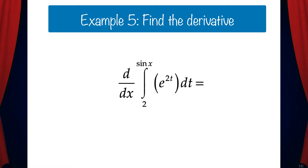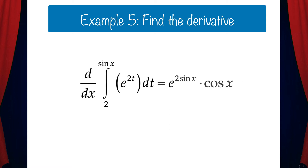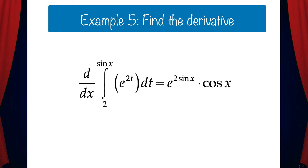Let's try an example. Find d/dx of the integral from 2 to sine x of e to the 2t dt. To find this derivative all we need to do is use the shortcut. That gives us e to the 2 sine x times cosine x. All we needed to do was replace t with sine x and then multiply by the derivative of sine x.